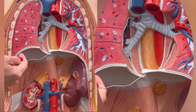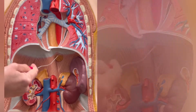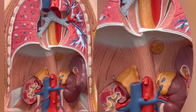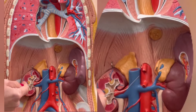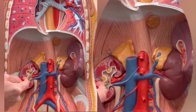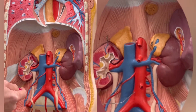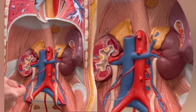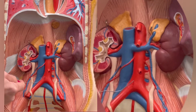After the aorta crosses the diaphragm, the aorta is within the abdominal cavity. Consequently, the portion of the aorta that is within the abdominal cavity is named the abdominal aorta.